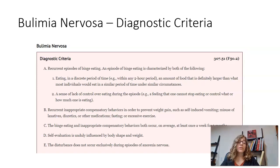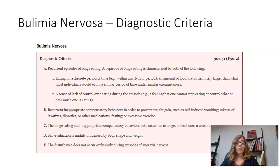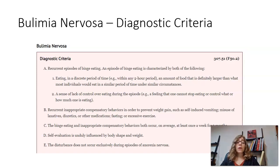Criterion B is recurrent inappropriate compensatory behaviors — what we could call purging behaviors — which typically include vomiting, misuse of laxatives, diuretics, or other medications, fasting, excessive exercise, or any combination of these. Somebody might have a huge out-of-control binge and then vomit, take laxatives, maybe take diuretics, exercise for three or four hours, and then fast the next day.